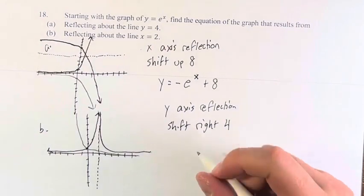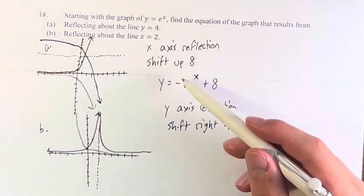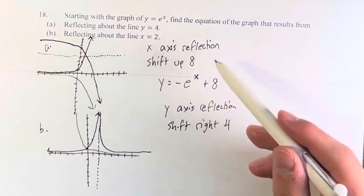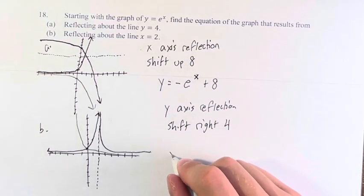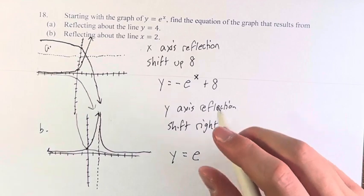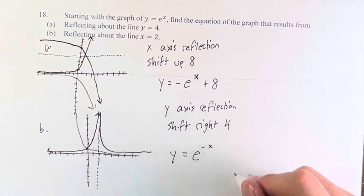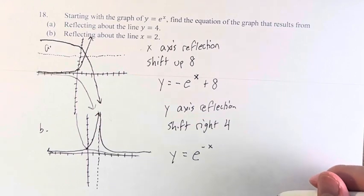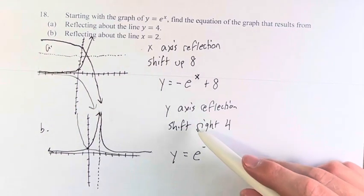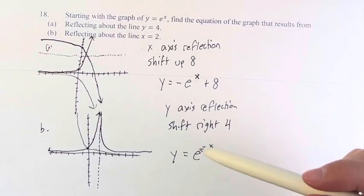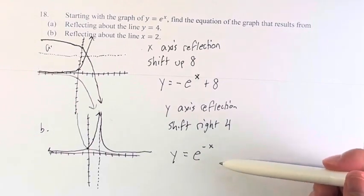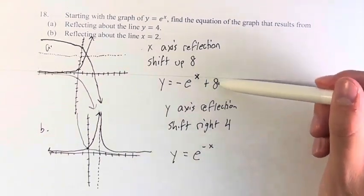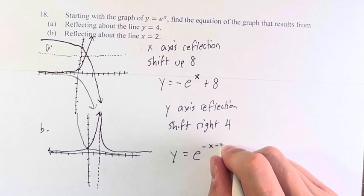So what does this look like? Like I said earlier, this is negative e to the x is an x-axis reflection. And y equals e to the negative x is a y-axis reflection. We are shifting to the right 4. So that means we have to subtract 4. But it's not here like we're adding 8 at the end. We're subtracting 4 from this x value.